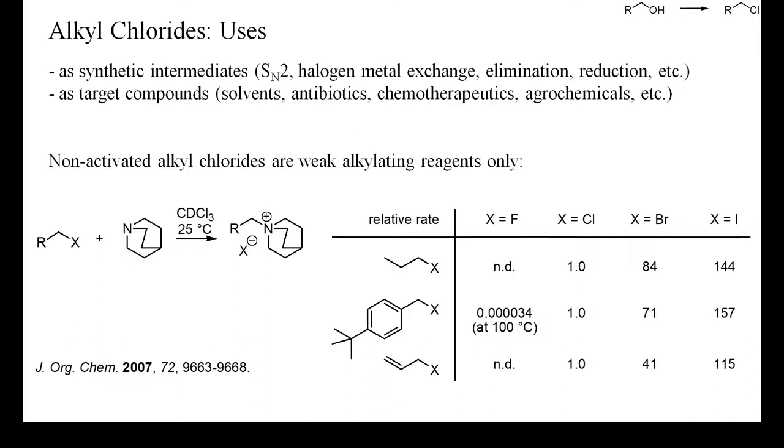Bromide and iodide waste is also more costly to dispose of than chloride and therefore alkyl chlorides should always be considered first as potential electrophiles for a given alkylation reaction.